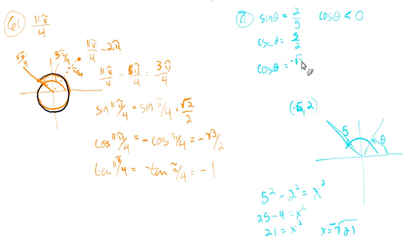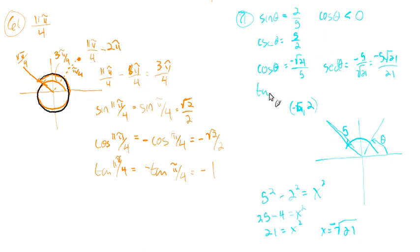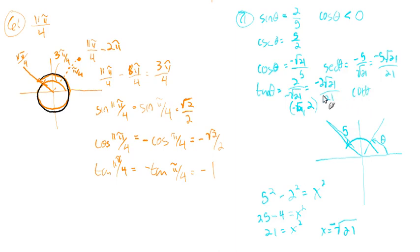The cosine is negative √21 over 5. The secant is the reciprocal, which is negative 5 over √21, rationalized as negative 5√21 over 21. The tangent is y over x: y is 2 and x is negative √21, giving 2 over negative √21, which rationalizes to negative 2√21 over 21. The cotangent is just the reciprocal of the tangent: negative √21 over 2. We use the given information to decide what quadrant we're in and fill in the blanks from there.